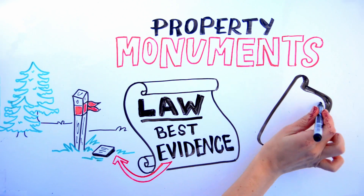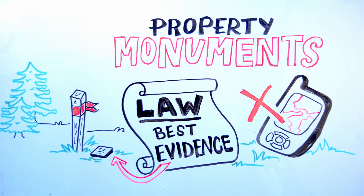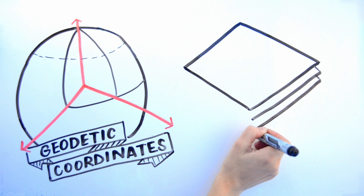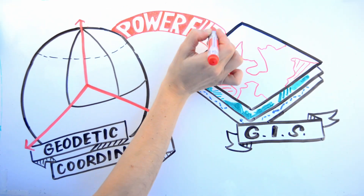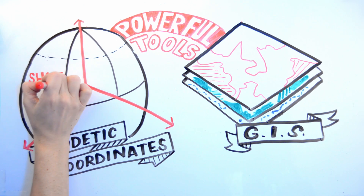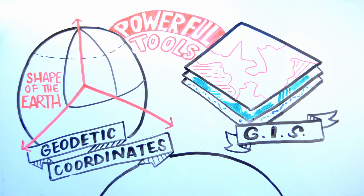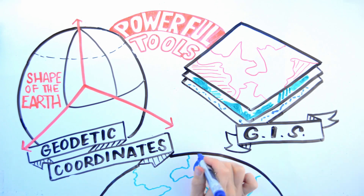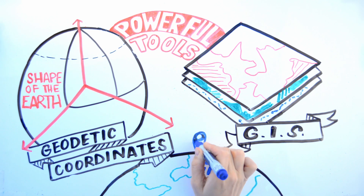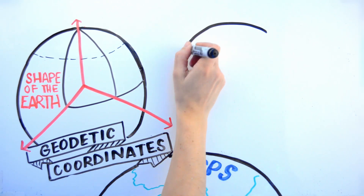Theoretical coordinates on a GIS or on a GPS receiver do not override the property monument on the ground. Geodetic coordinates and GIS provide powerful tools for planning and managing construction projects. A geodetic coordinate system takes into account the shape of the earth and provides for the use of global navigation satellite systems such as GPS. Defining parameters include reference datum, units, and map projections.